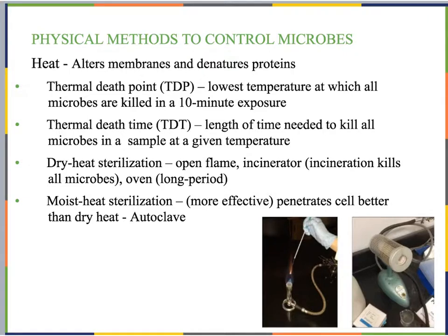The first physical method is heat. When we apply heat, it alters the membranes and denatures the proteins. If we get proteins really hot, those hydrogen bonds within the different amino acid side chains are going to start to fall apart, and even the peptide bonds between the amino acids will fall apart as well. Denaturing proteins means denaturing enzymes, which kills the organism. Altering the membranes causes cell lysis, killing the organism as well.